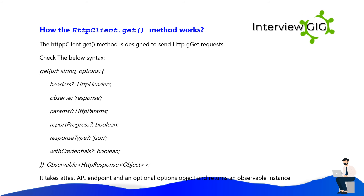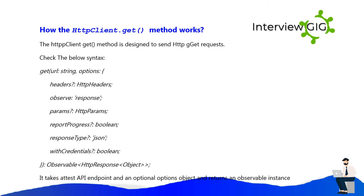How does the HTTP client.get method work? The HTTP client.get method is designed to send HTTP GET requests. It takes a test API endpoint and an optional options object and returns an observable instance.